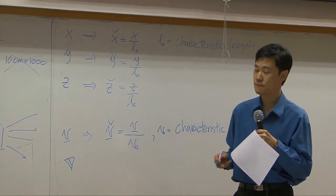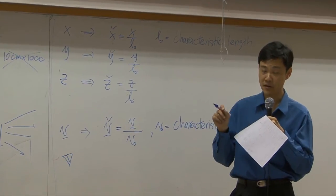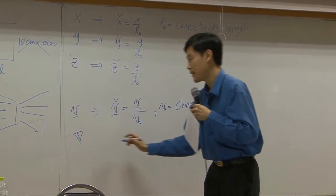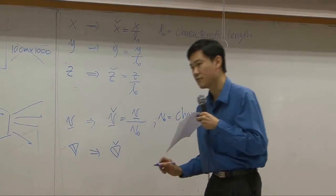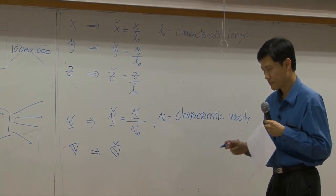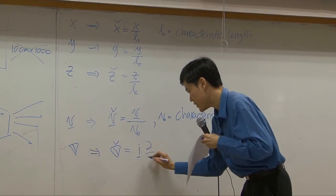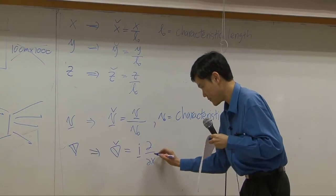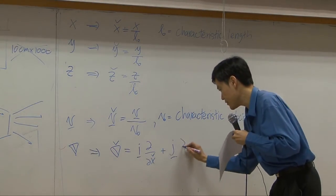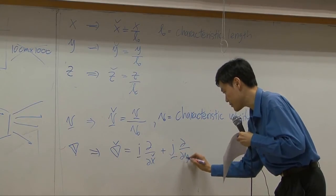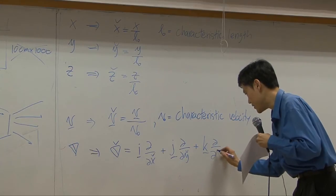Also, del has unit of per meter. I'm going to define another operator called del hat. Del hat is defined by i d by dx hat plus j d by dy hat and k d by dz hat.